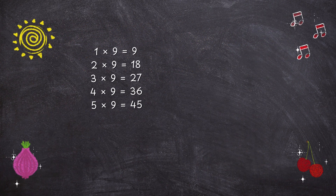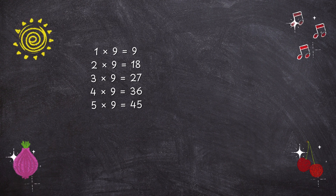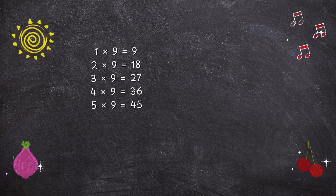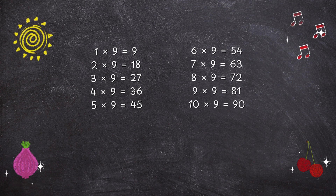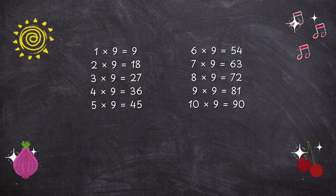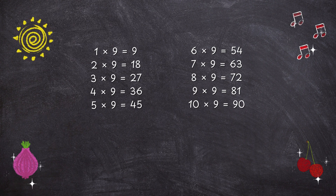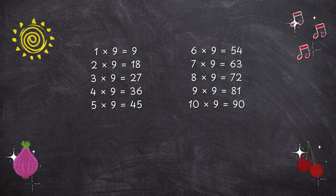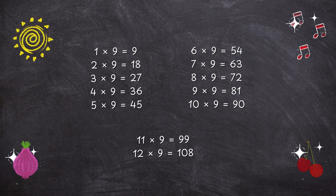1 x 9 is 9. 2 x 9 is 18. 3 x 9 is 27. 4 x 9 is 36. 5 x 9 is 45. 6 x 9 is 54. 7 x 9 is 63. 8 x 9 is 72. 9 x 9 is 81. 10 x 9 is 90. 11 x 9 is 99. 12 x 9 is 108.